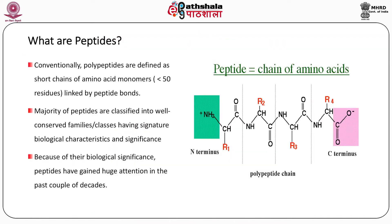What are peptides? Conventionally, polypeptides are defined as short chains of amino acid monomers linked by peptide bonds as shown in the figure. Peptide equals a chain of amino acids; there is the N terminus, in between the CO-NH are the peptide bonds, and then you have the polypeptide chain which ends at the C terminus. Majority of peptides are classified into well-conserved families and classes having signature biological characteristics and significance, and because of their biological significance, peptides have gained huge attention in the past couple of decades.